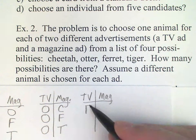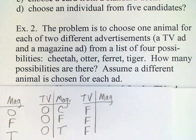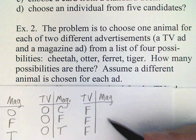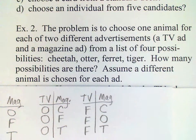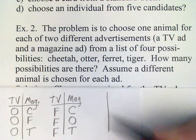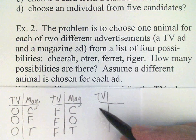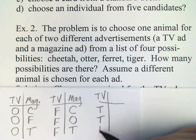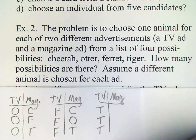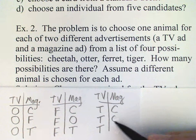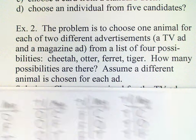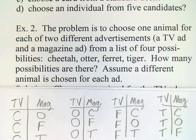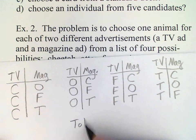And then we could have the ferret on TV — I really think the cheetah would be the best one for the TV ad, but that's just personal opinion — with cheetah, otter, or tiger for the magazine ad. And then finally, we could have the tiger on TV, and the possibilities for the magazine ad are cheetah, otter, and ferret. So that covers it. We look at our charts here and we see there are four groups with three possibilities each, and so the total is 12.